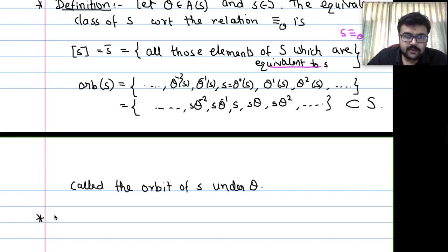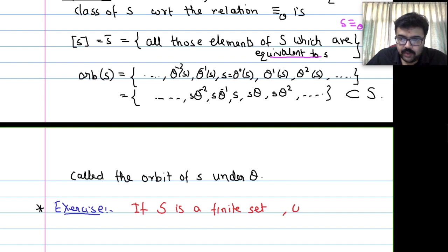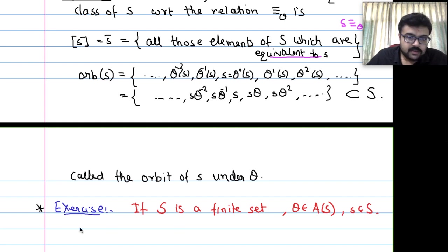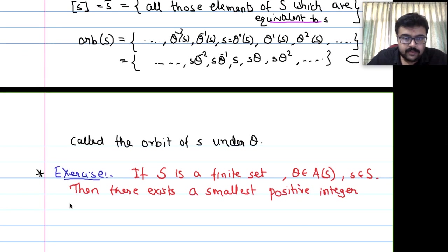Exercise: If S is a finite set, theta belongs to A(S) = S_n, and s belongs to S, then there exists a smallest positive integer L = L(s) such that theta^L(s) = s. Moreover, all elements s, theta(s), theta^2(s), ..., theta^{L-1}(s) are distinct.